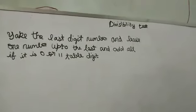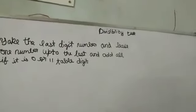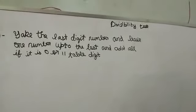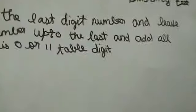For 11, take the last digit number and leave one number up to the last and add all. If it is zero or 11 table digit, example: